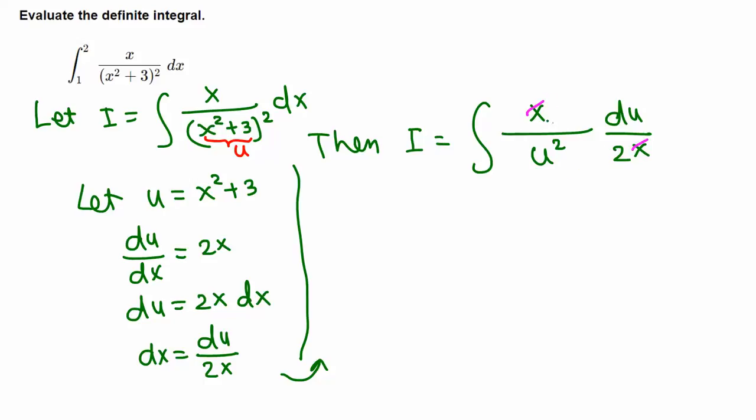This x was given so that we can do this integral. The 2 on the bottom is a constant and can be pulled outside, so we get one-half integral of 1 over u squared, which is the same as u to the negative 2, du.